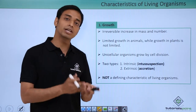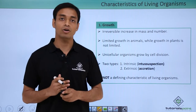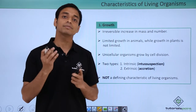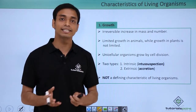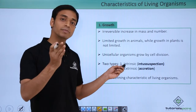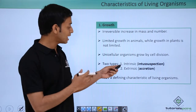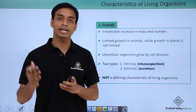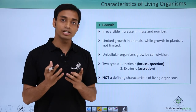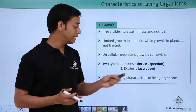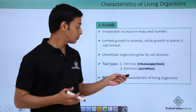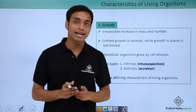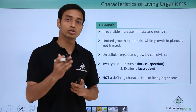In unicellular organisms, growth occurs by cell division. Growth can happen in two types. First, intrinsic growth — when cells are added intrinsically, that is inside the body; this is also known as intussusception. The other type is extrinsic growth — when addition is done from outside the surface, also known as accretion. Examples of extrinsic growth are mountains, glaciers, and sand dunes, which are non-living objects also showing growth.